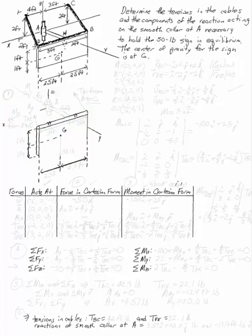Determine the tensions in the cables and the components of the reactions acting on the smooth collar at A necessary to hold the 50-pound sign in equilibrium, where the center of gravity for this sign is at G.